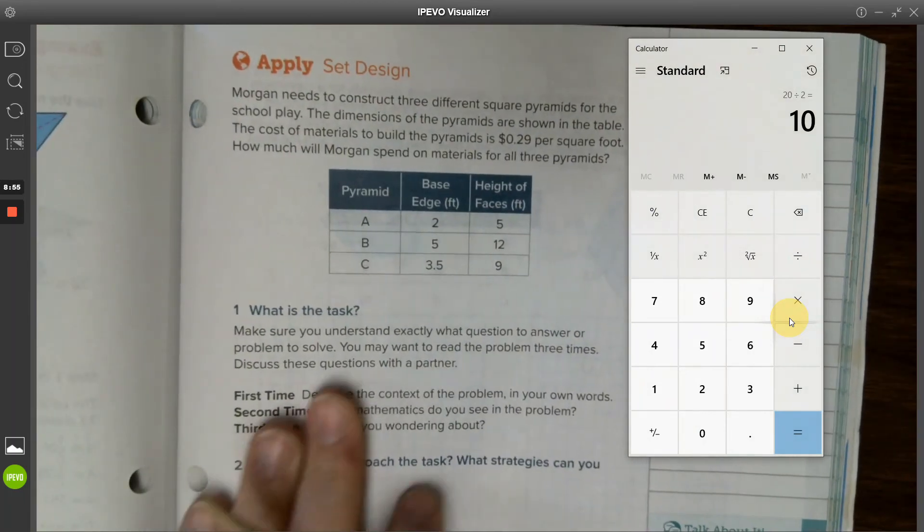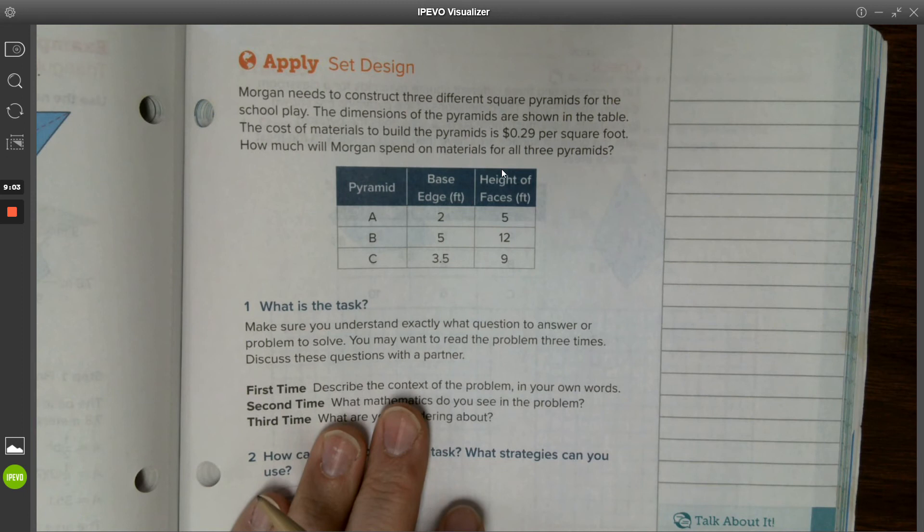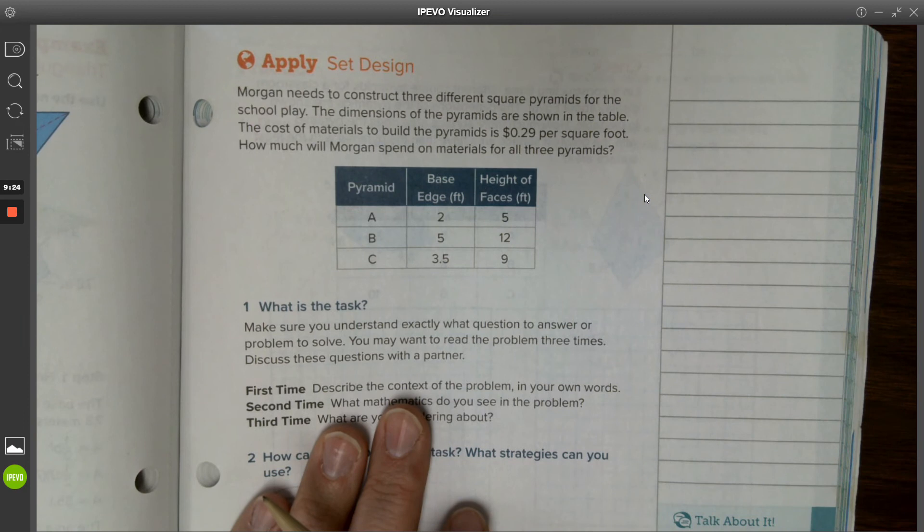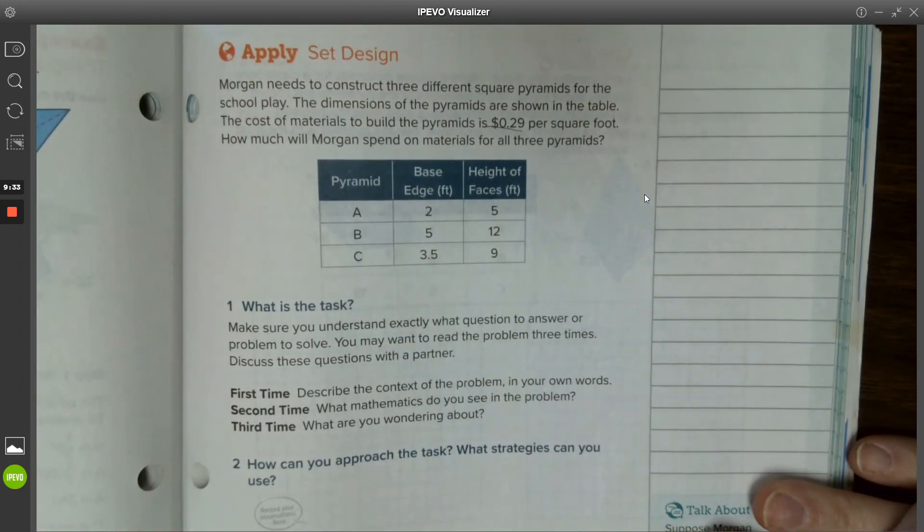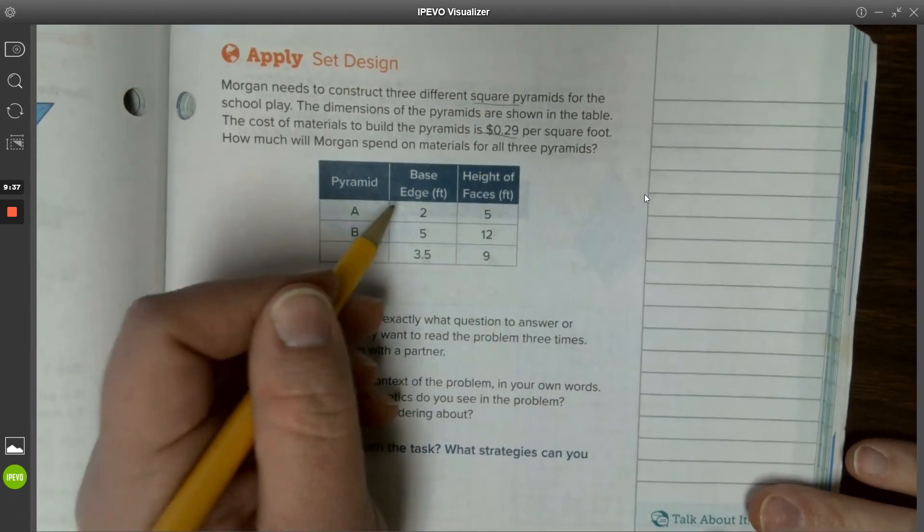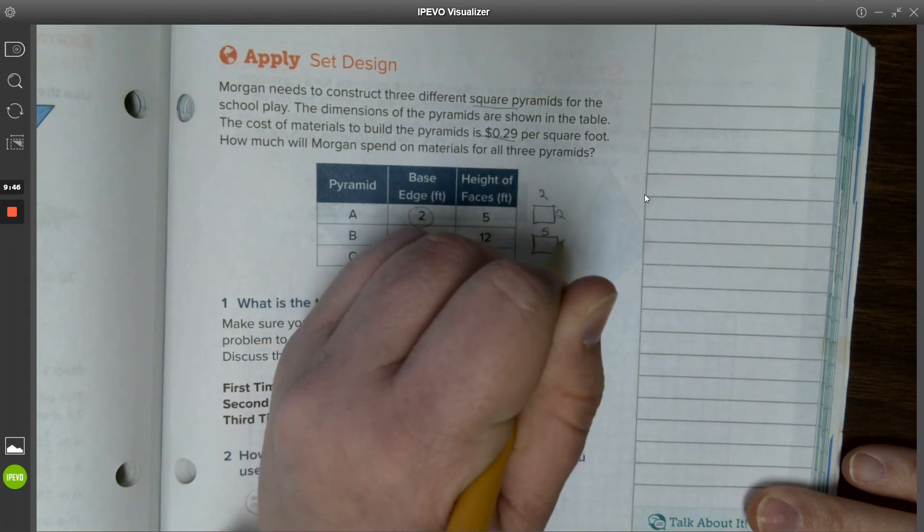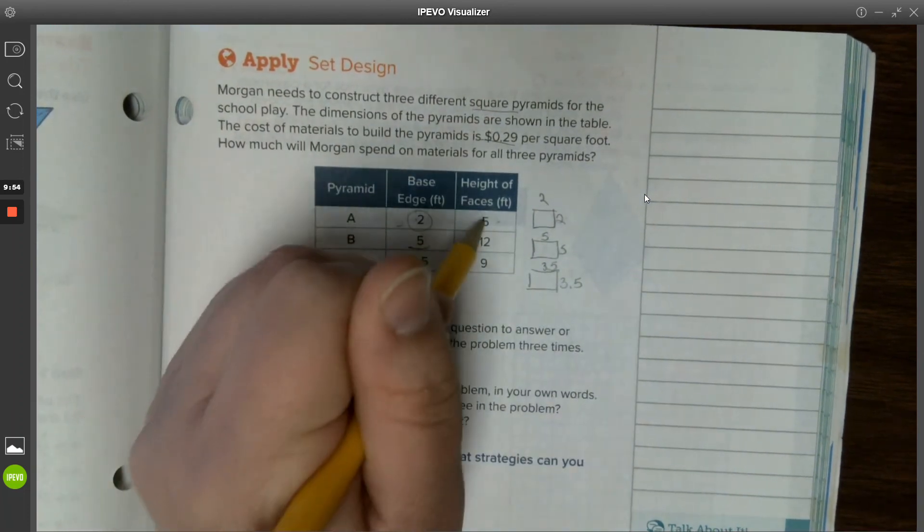All right, last problem here. Here is your apply problem. As usual, you're going to give it a try and email me your answer. Morgan needs to construct three different square pyramids for school play. The dimensions of the pyramids are shown in the table. The cost of the materials to build the pyramids is 29 cents per square foot. How much will Morgan spend on materials for all three pyramids? You need to figure out first what is the surface area for each of the pyramids, and then multiply by 29 cents per square foot, and that will give you the total amount. Now remember, these are square pyramids, so if the base edge is 2, the base here would be 2 by 2. The base edge is 5, 5 by 5. 3.5, same thing here, 3.5 by 3.5. And then you would multiply by the height to get each of the four faces and divide by 2.